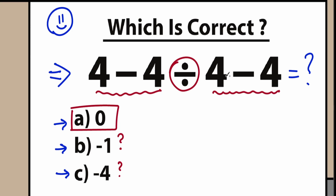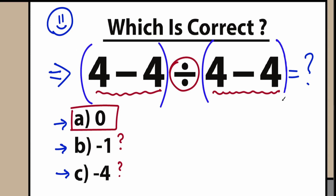Students might ask: why is this approach wrong? As I said, subtraction always comes after division. There is one tricky moment: when we consider it as a group — grouping the left side and the right side — we're considering it as subtraction inside parentheses. Then parentheses have higher priority, so we get 0 on each side. Then we have 0 divided by 0, which is undefined.